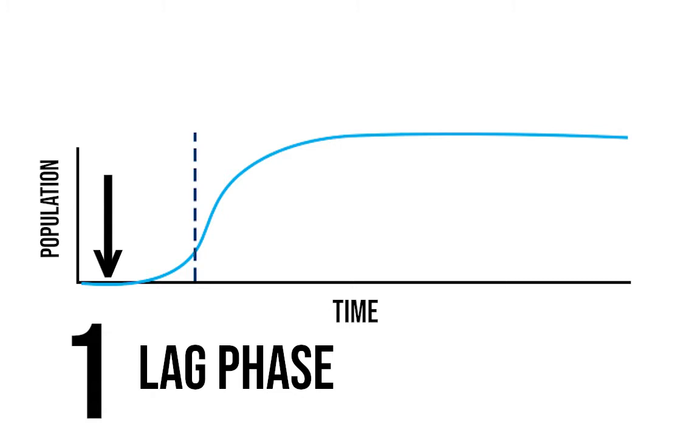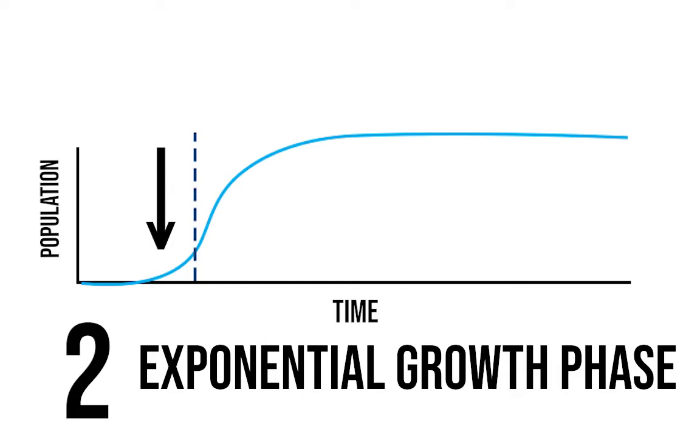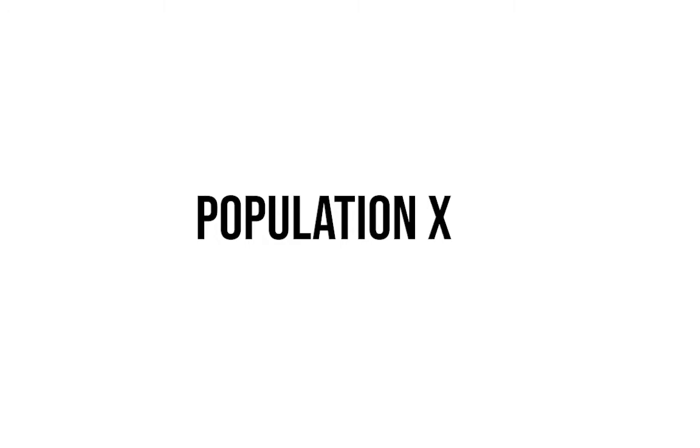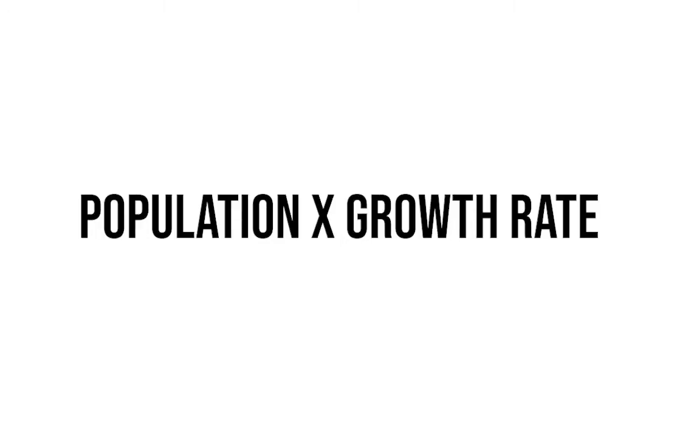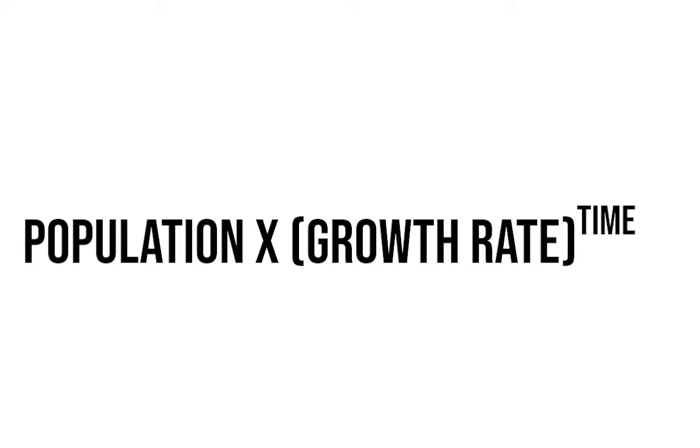Then we get to a situation where reproduction is really starting to outpace that death. So that would be the exponential growth phase. The reason they call it exponential growth is because when you're calculating exponential growth, you take the population at a given time, multiply by the growth rate, and that growth rate is going to be to the exponent of the time.